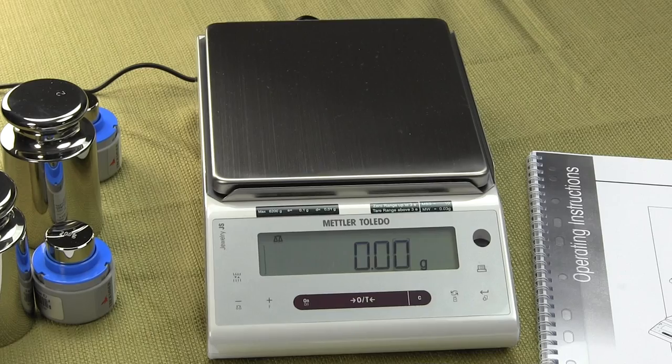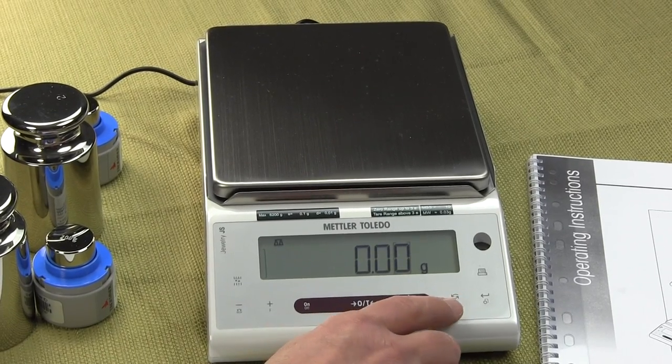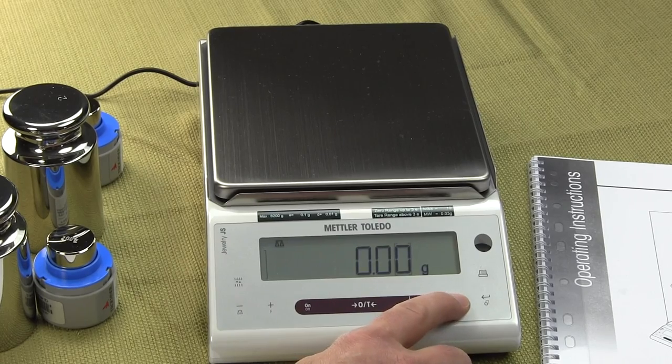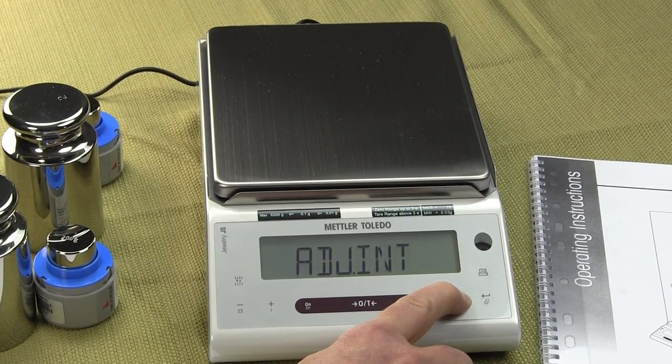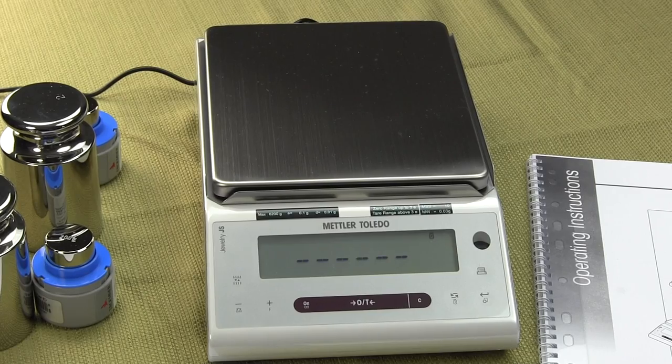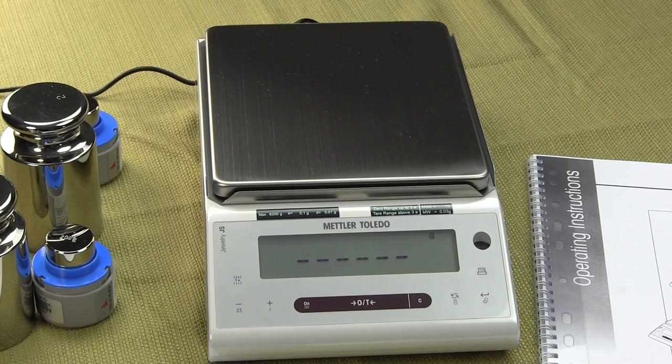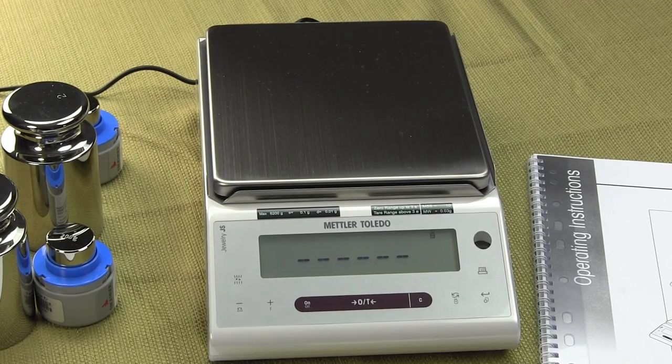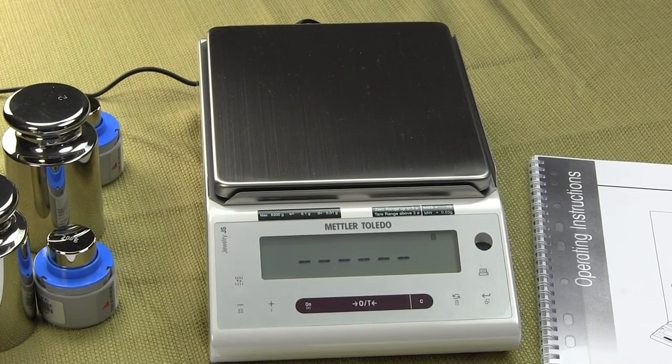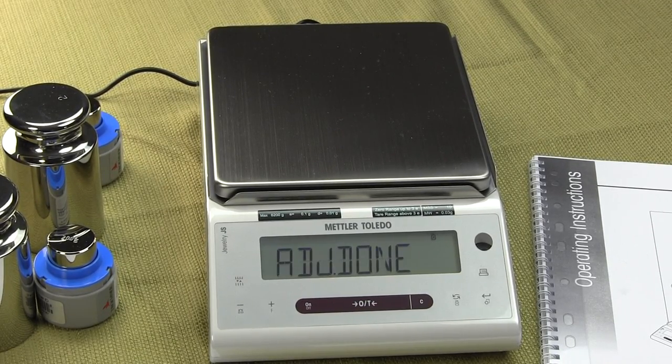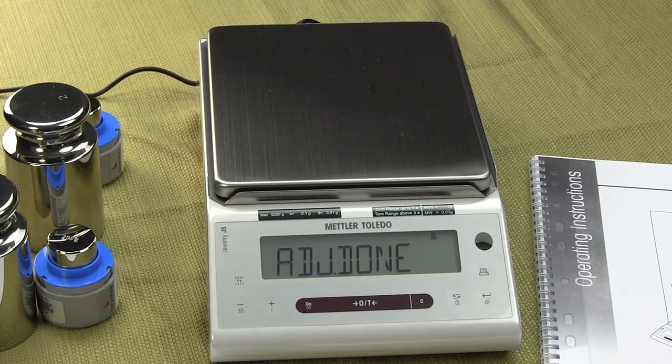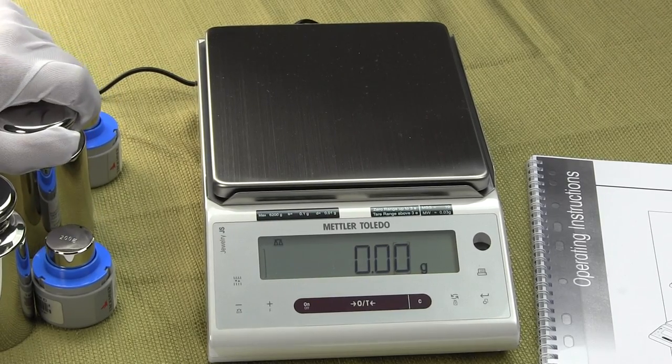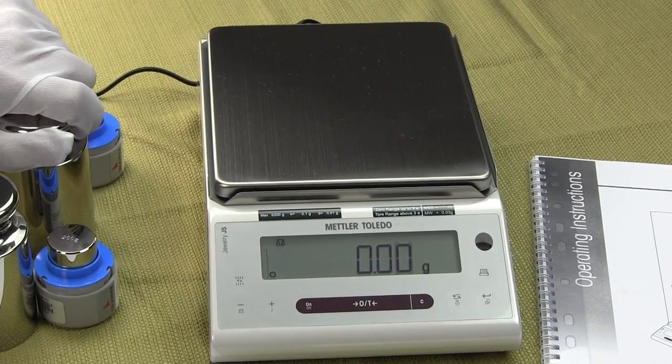this has motorized internal calibration. One simply presses this button over here and you hold it down to perform the calibration. Adjust internal. That noise you heard was the motorized internal calibration lowering the weight inside the balance.